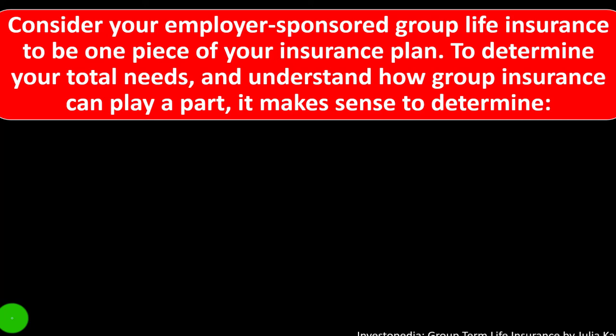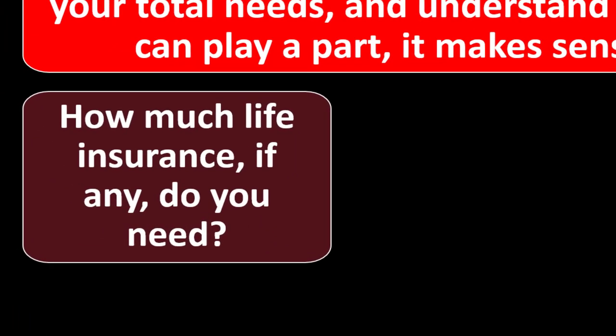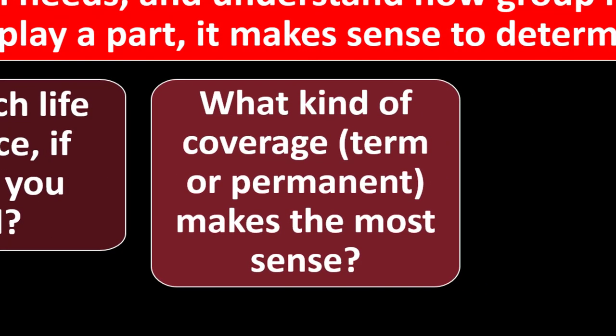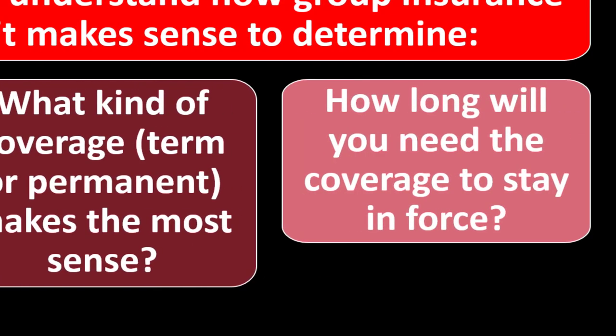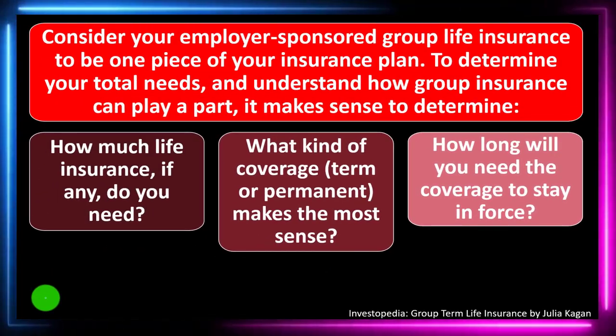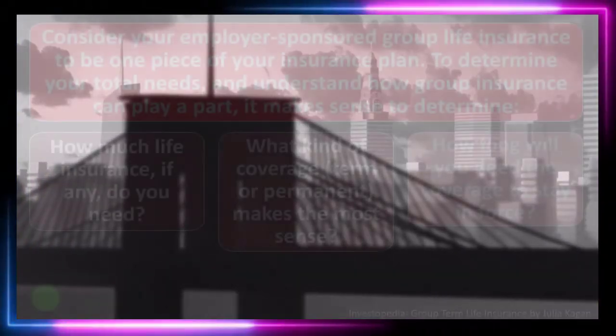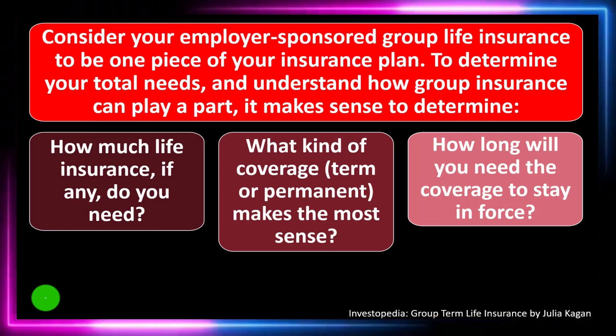Determine your total needs and understand how group insurance can play a part. Consider: how much life insurance do I need, if any? Are there people dependent on me? Do I have debt, funeral costs, or significant assets? What kind of coverage — term or permanent — makes the most sense, and how long will I need the coverage? Group coverage through an employer can be one component of your overall risk mitigation strategy related to early death and dependent family members.